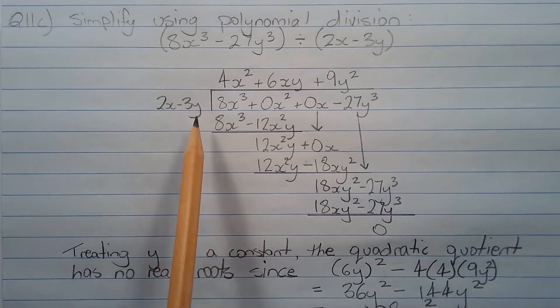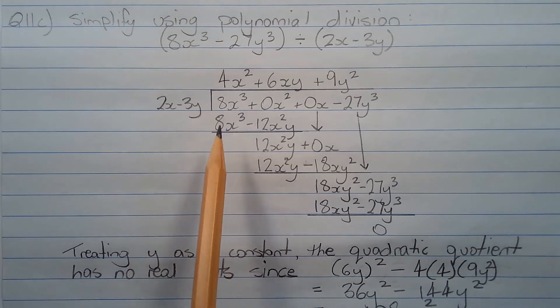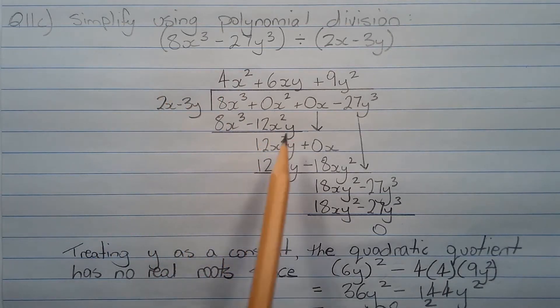This is our divisor. I'm going to treat x as the variable and y as the constant. So 2x into 8x cubed goes 4x squared times. Taking 4x squared and multiplying it by the divisor, we get 8x cubed minus 12x squared y.